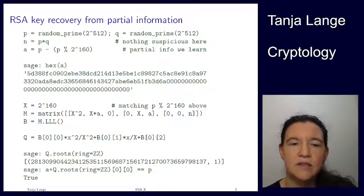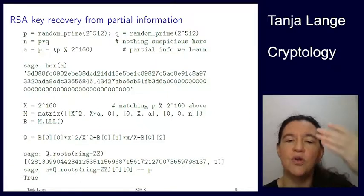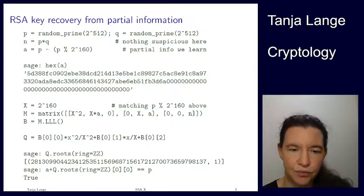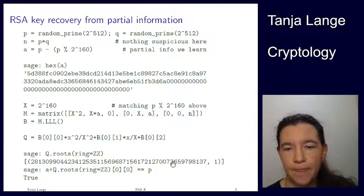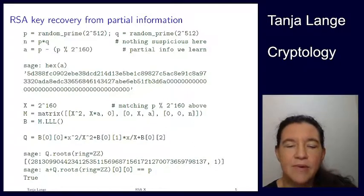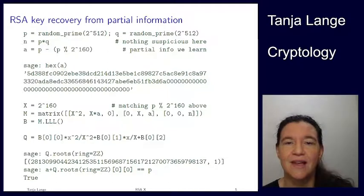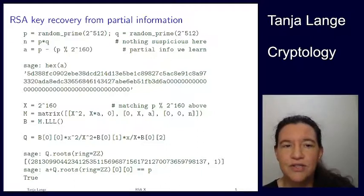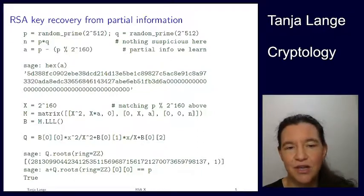Then I'm asking SAGE to give me all the roots of it. Per se this is a quadratic polynomial, so I could imagine I would get two roots of it. But actually it's only one of these which is an integer root. Here is my candidate r. Then I'm asking SAGE whether a plus r is actually equal to the prime, and SAGE says yes it is. So you can try this yourself. Of course when you get to the hexadecimal here you will see your own value, but everything else is the same.